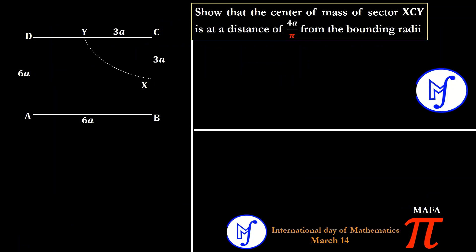We are going to get started with this question. We are going to use integration to show that the center of mass of sector XCY is at a distance of 4a/π from the bounding radius. This is a sector whose center is at C. The radius of the sector is 3a, since that is the distance from the center to any point on the arc — so the distance from C to X is 3a and from C to Y is 3a.